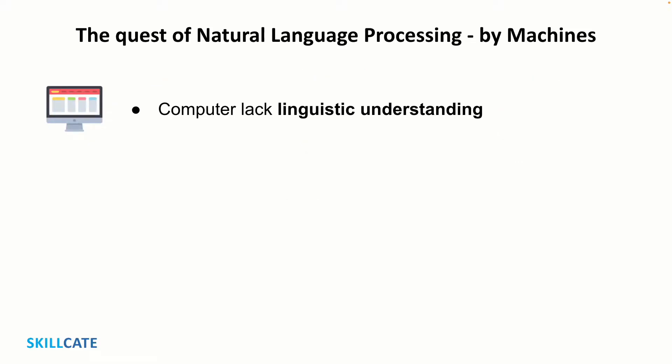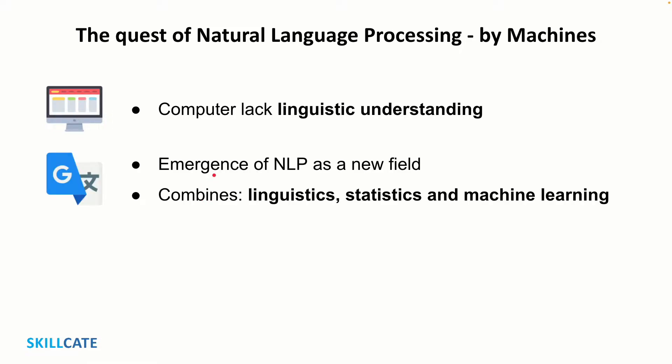Understanding language has always been a difficult affair for computers. Sure, computers can collect, store and read textual inputs, but they lack basic language context. Then came natural language processing, or NLP, a new field of artificial intelligence that aimed at enabling computers to read, analyze, interpret and derive meaning from text and spoken words just like we do as humans. NLP combines linguistics, statistics and machine learning to assist computers in understanding human language.